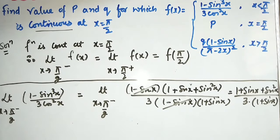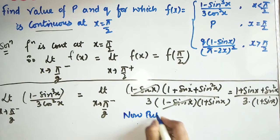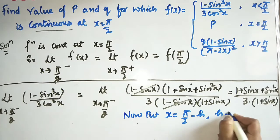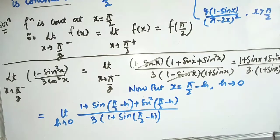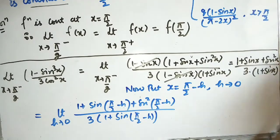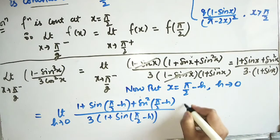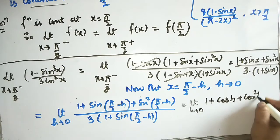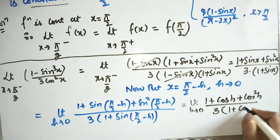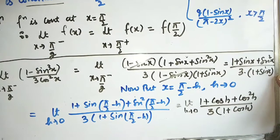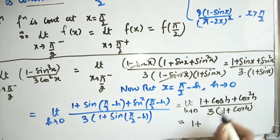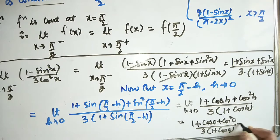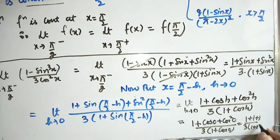Now we put x = π/2 - h where h → 0. Since sin(π/2 - h) = cos h, the expression becomes (1 + cosh + cos²h) / (3(1 + cosh)). Putting h = 0: (1 + 1 + 1) / (3 × (1 + 1)) = 3 / (3 × 2) = 1/2.